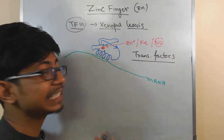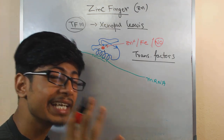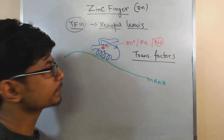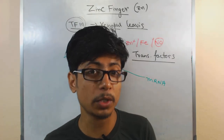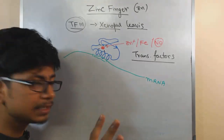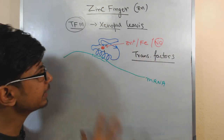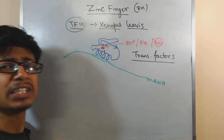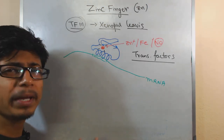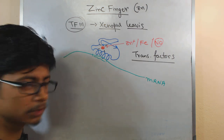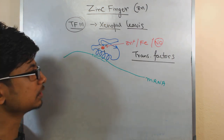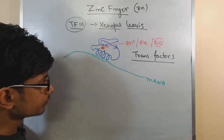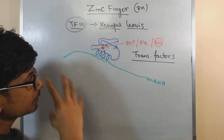The zinc finger is essentially a DNA, RNA, or protein interacting domain. Inside the cell, it is very important for regulating transcription, regulating translation, DNA replication, and many other cellular processes — including cellular trafficking in some cases, because of the protein-protein interaction nature of these domains.